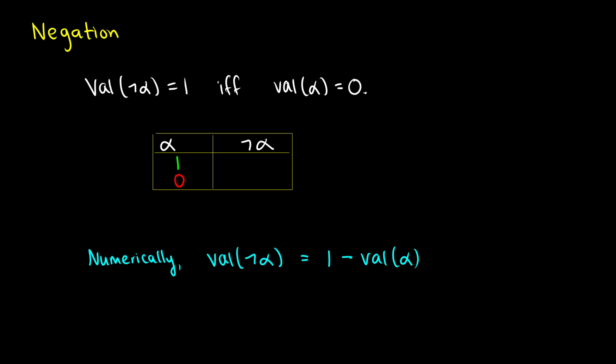Let's take a look at each of the operators one by one. The negation — this is the word 'not.' How this works is: the value of not-alpha is 1 if the value of alpha is 0. Basically, if we have P as true, then not-P is going to be false, and vice versa. If P is false, then not-P is going to be true. For example, 'I am asleep right now' — that's false. 'I am not asleep right now' — that's true. So if alpha is 1, that means not-alpha is 0, and if alpha is 0, this means not-alpha is 1.